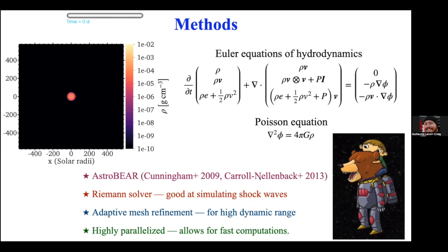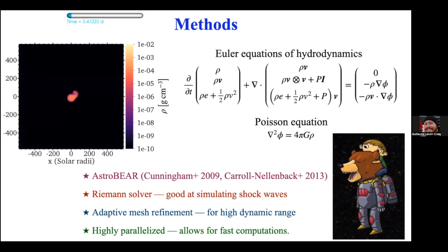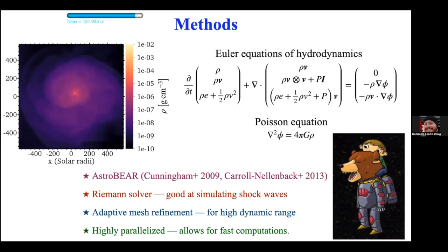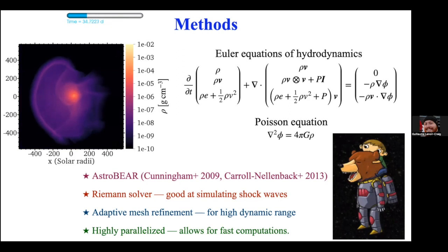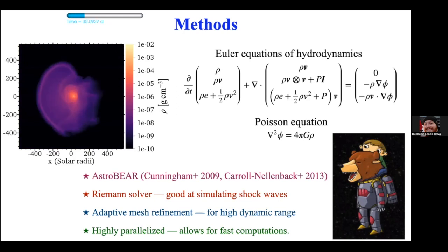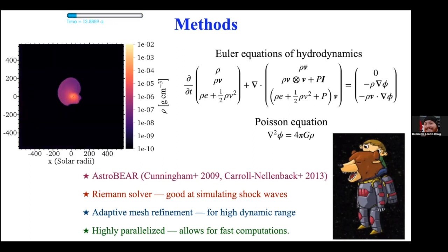Let me show you a movie of one of our recent simulations — the longest I've done. You'll see it doesn't go to completion but ejects some of the envelope until we run out of computer time. The time at the top counts in days. The in-spiral is very rapid — about 100 days, with over 100 orbits during that period. This is a slice through the orbital plane, and we simulated a two solar mass red giant branch star with a one solar mass companion.